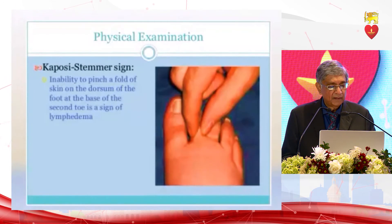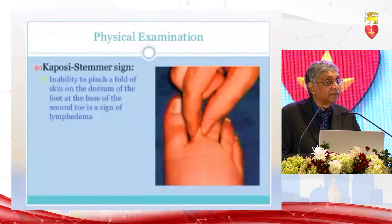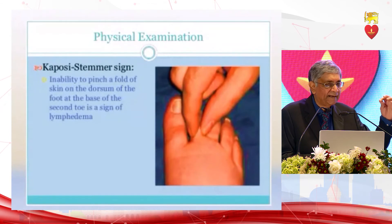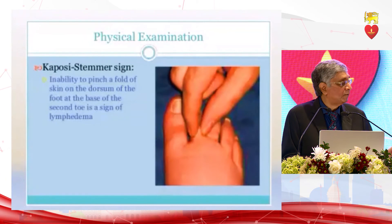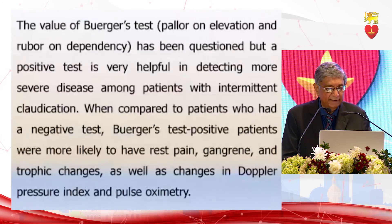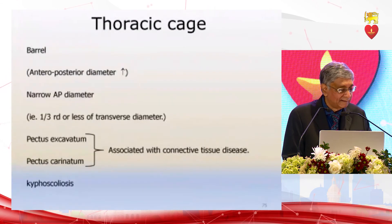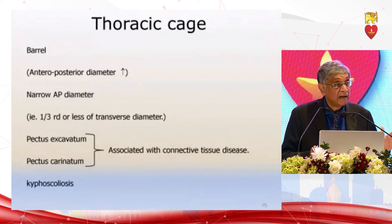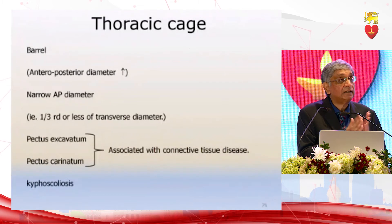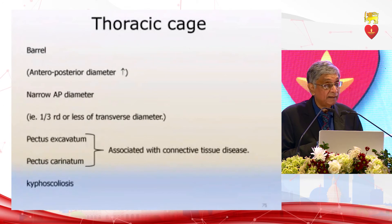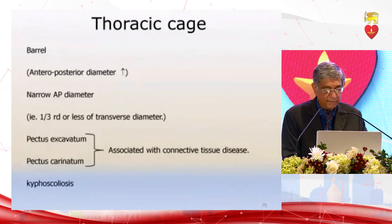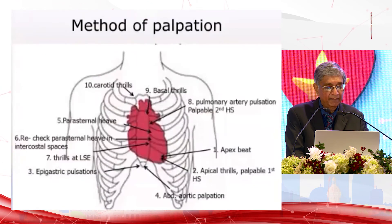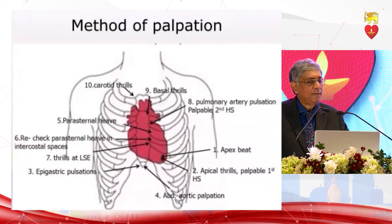Physical examination of the lower limb: the Kaposi-Stemmer sign — lymphoedema is difficult to distinguish from ordinary oedema. At the second digit, if you can pick up a fold of skin it is oedema; if you cannot pick up a fold of skin, it is most likely lymphoedema. Coming to the thoracic cage on inspection: look at the chest — barrel-shaped chest with increased anteroposterior diameter; a narrow AP diameter less than one third of the transverse diameter may be associated with underlying conditions. Pectus excavatum, pectus carinatum, and kyphoscoliosis are all associated with pulmonary hypertension. Check the body mass index, and then move to palpation.